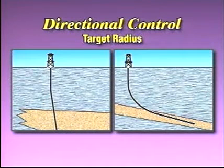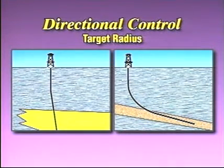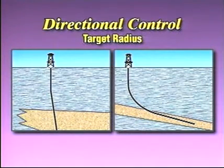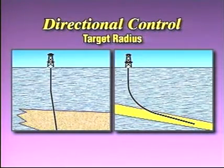This target radius indicates how tightly we have to control the well trajectory. The degree of control is much less critical for a relatively thick homogeneous interval than it would be for a thin, steeply dipping zone.